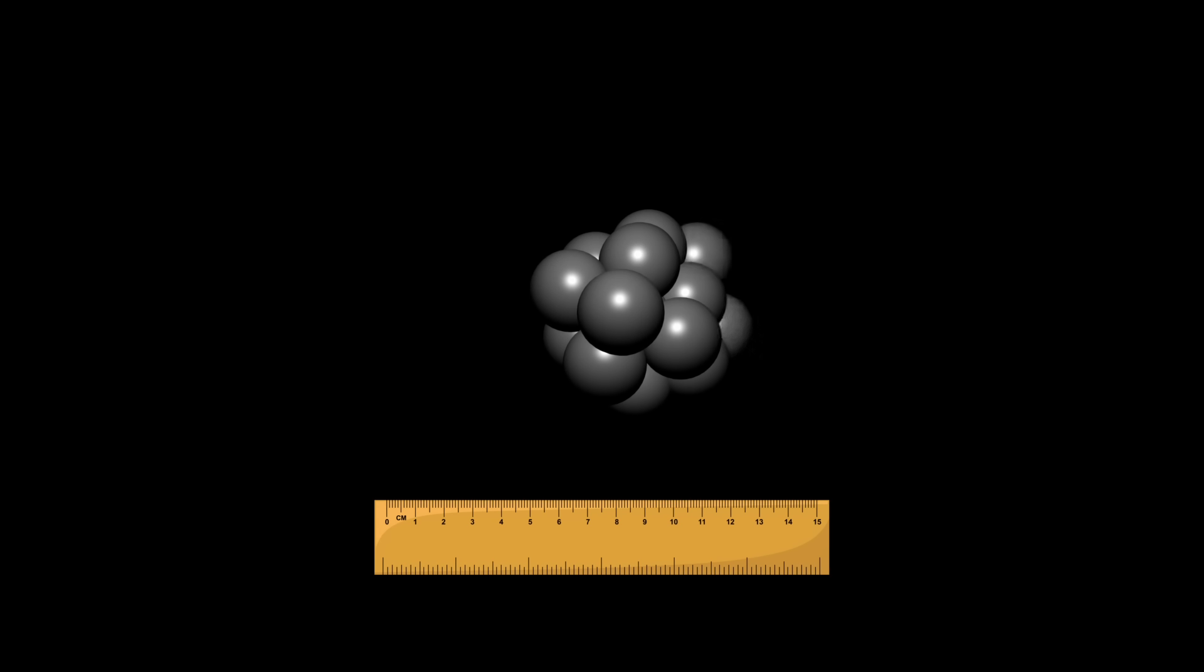The simplest expectation is that charge radius should scale smoothly with atomic number. A common estimate uses the formula R equals R0 times the cube root of A, where R0 is a scaling factor and A is the total number of nucleons. This assumes that nuclei behave like a roughly uniform sphere of nucleons, meaning their size grows in a predictable way as more protons and neutrons are added. However, this is not what we observe.